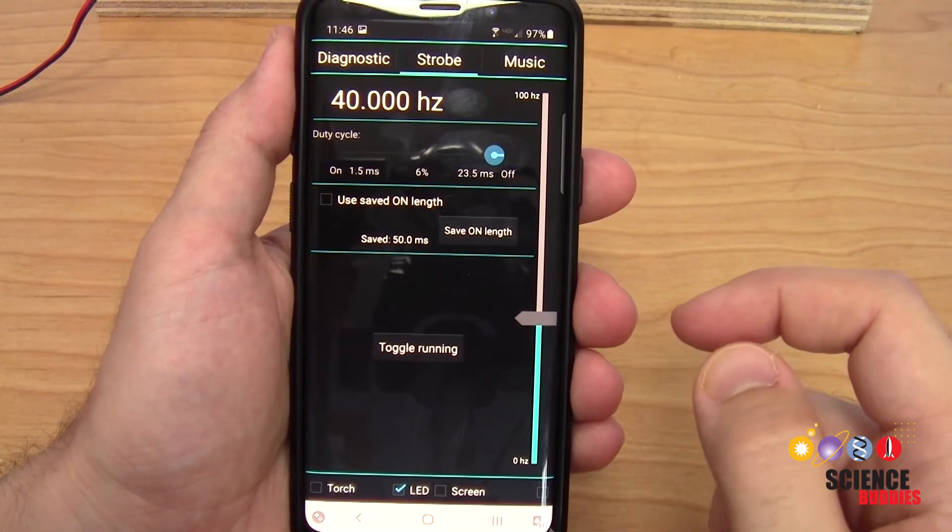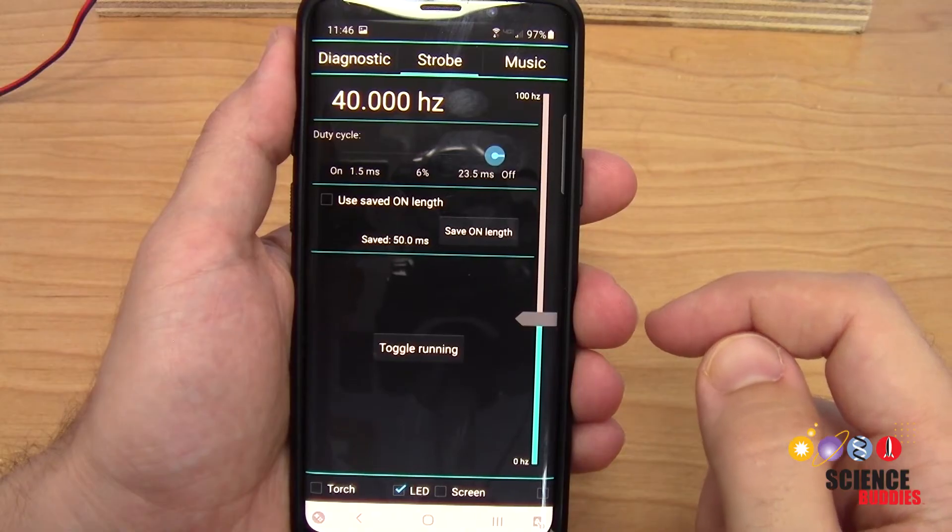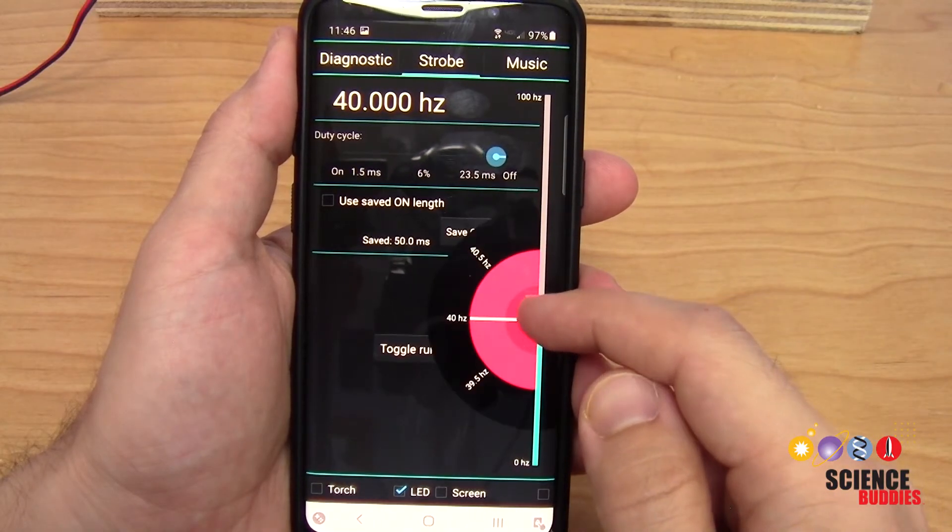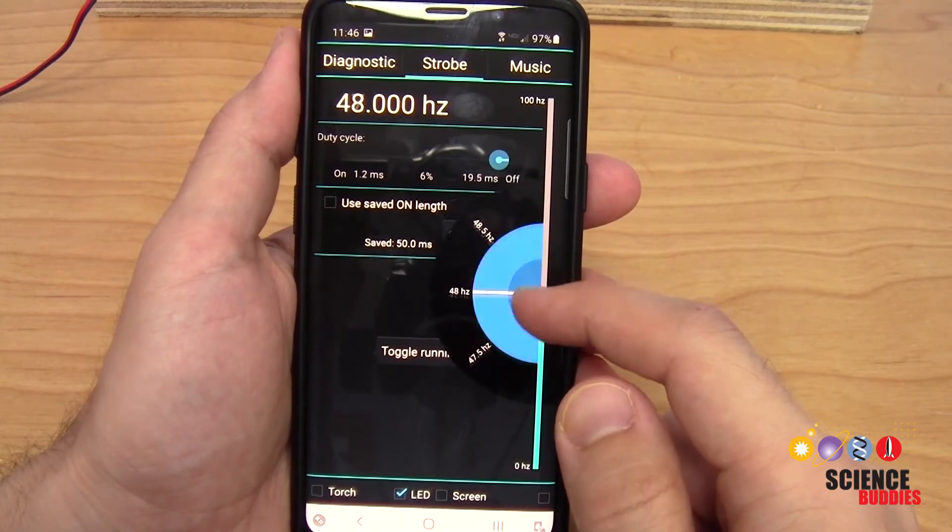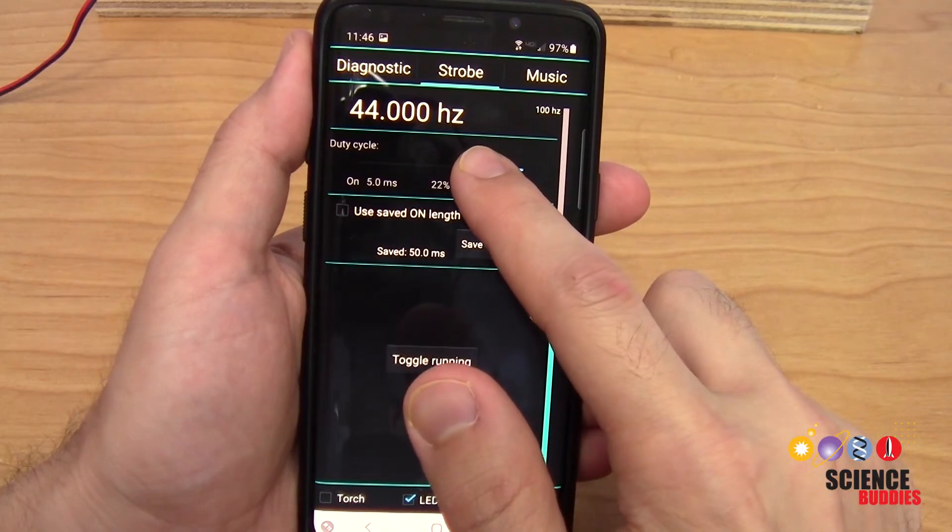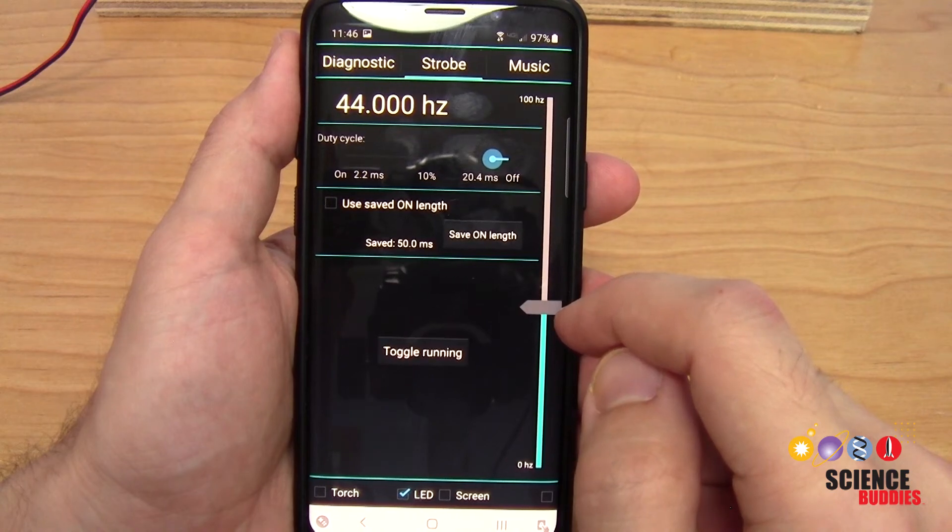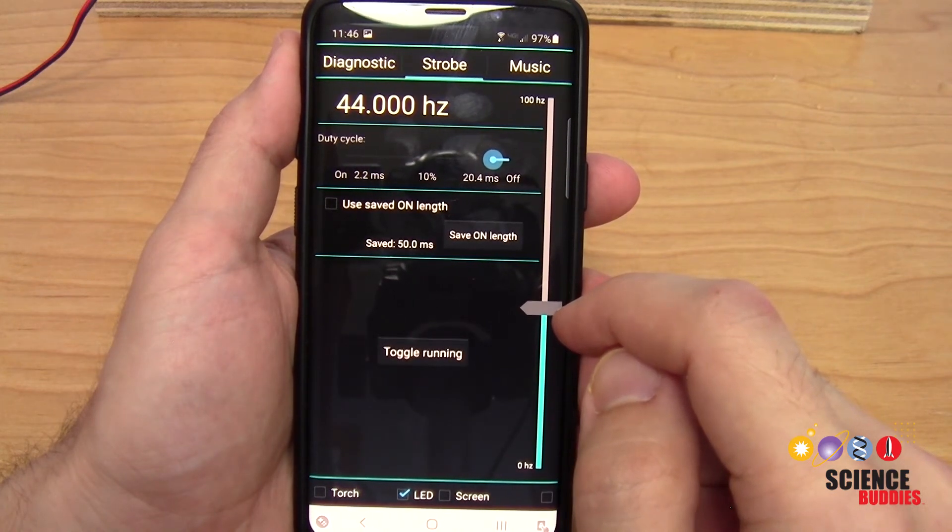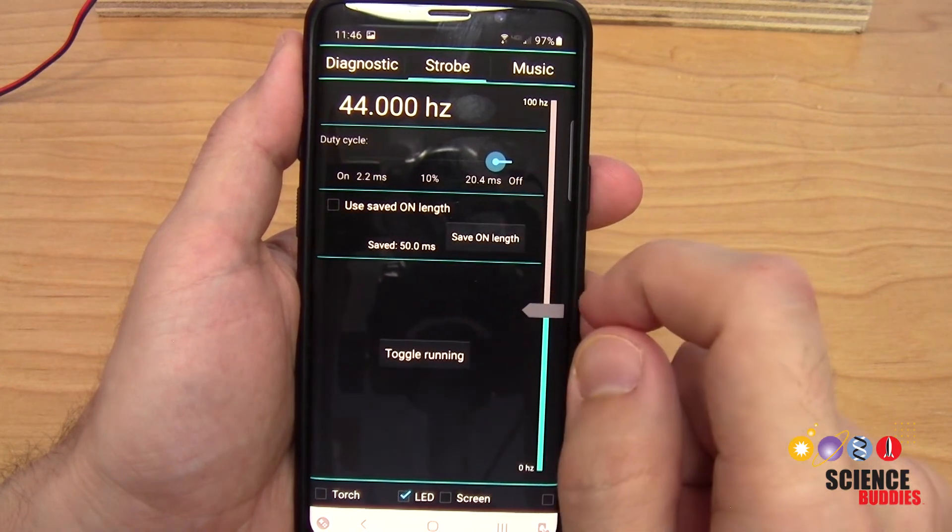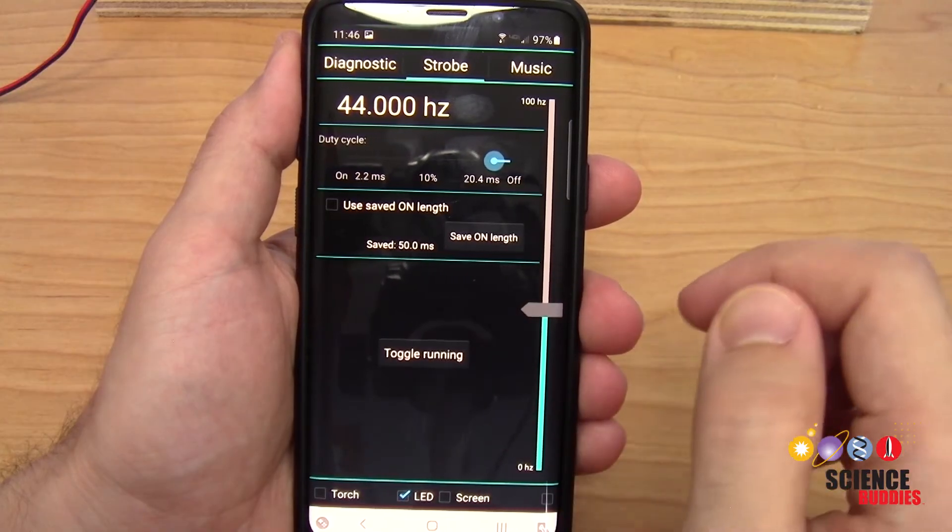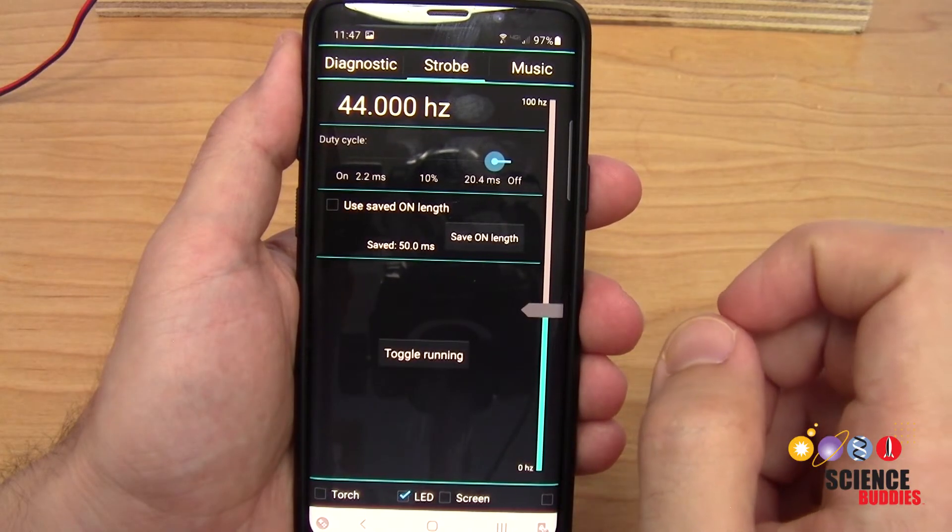Now it's time to add the strobe. You'll need to find a strobe light app for your phone. Make sure it allows you to adjust both the frequency and the duty cycle of the strobe light. The frequency, measured in Hertz, is the number of times the strobe flashes per second. The duty cycle, measured as a percentage, is the percentage of each period that the strobe is on.